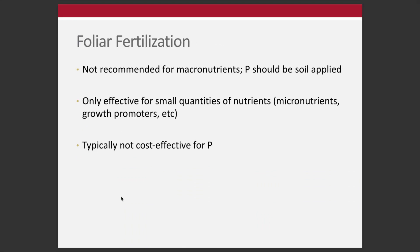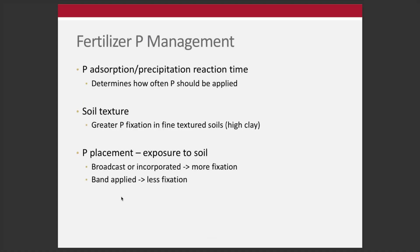Foliar fertilizer is really not recommended for macronutrients. Despite what people may want to sell you, plants have evolved to take up nutrients through the roots, not through foliage. Foliar fertilizers make sense for very small quantities of nutrients, especially when there's a lot of soil binding, but phosphorus is not one of these cases. Phosphorus should be soil applied. Foliar fertilization is typically not cost effective for phosphorus, and if someone tries to sell you on foliar phosphorus application, ask for data and be very skeptical of that recommendation.